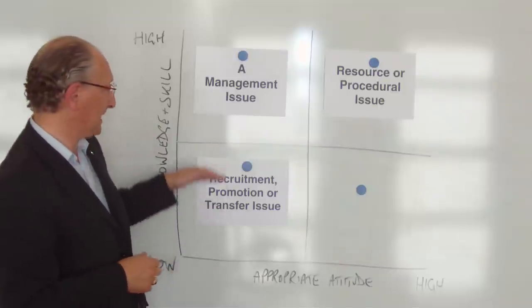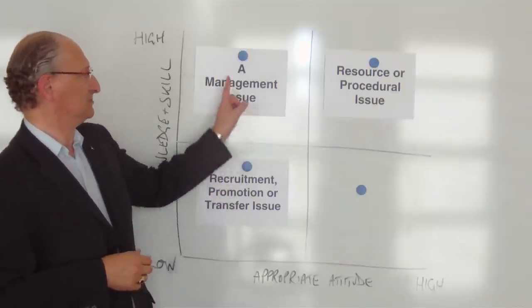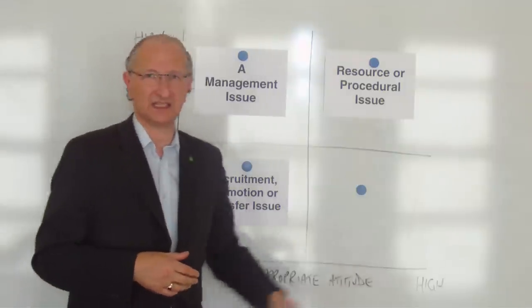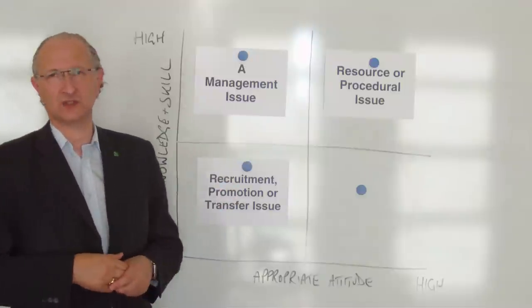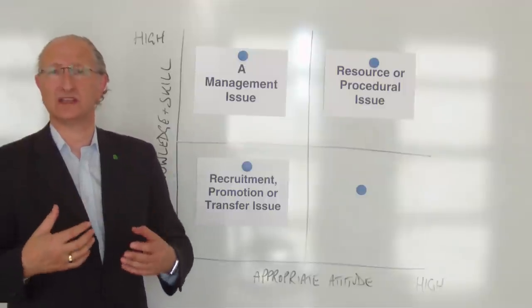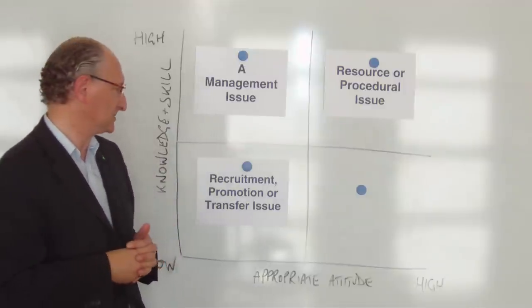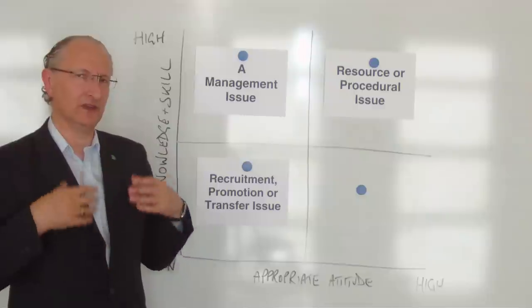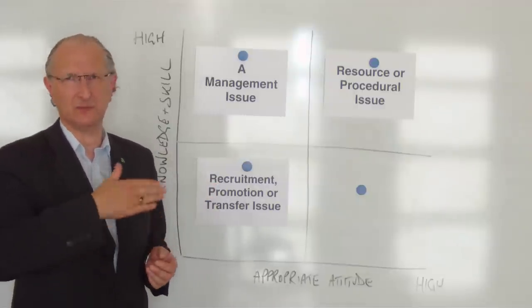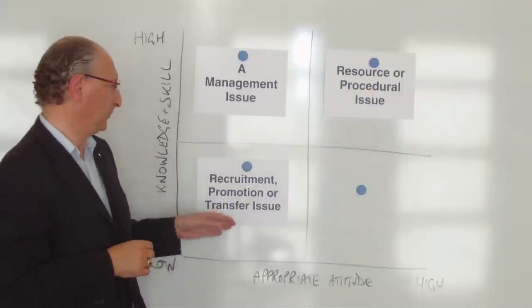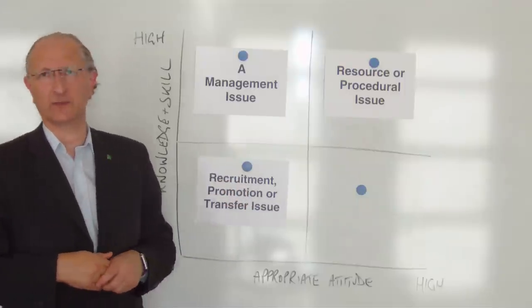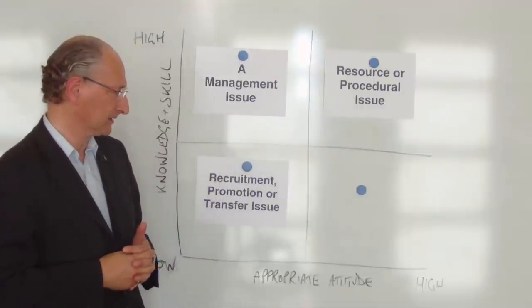Consequently, in many cases we will throw training and development into this quadrant. Again, the person might acquire the knowledge and skill, but all we do is move them up here into a management issue. Really, we need to address attitudinal issues before we start to address the knowledge and skill issues, or we need to address them simultaneously. In those circumstances, if we don't do that, if we don't address these attitudinal issues, what training is doing is almost trying to paper over the problems that have been created by inappropriate recruitment, inappropriate promotion, or inappropriate transfer from one job to another.